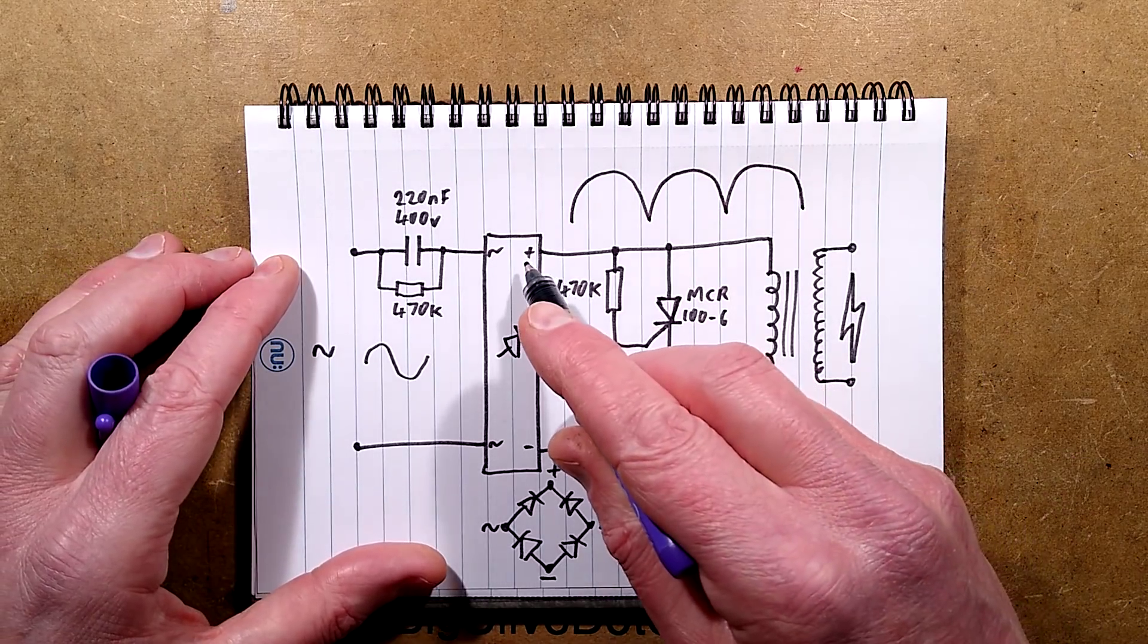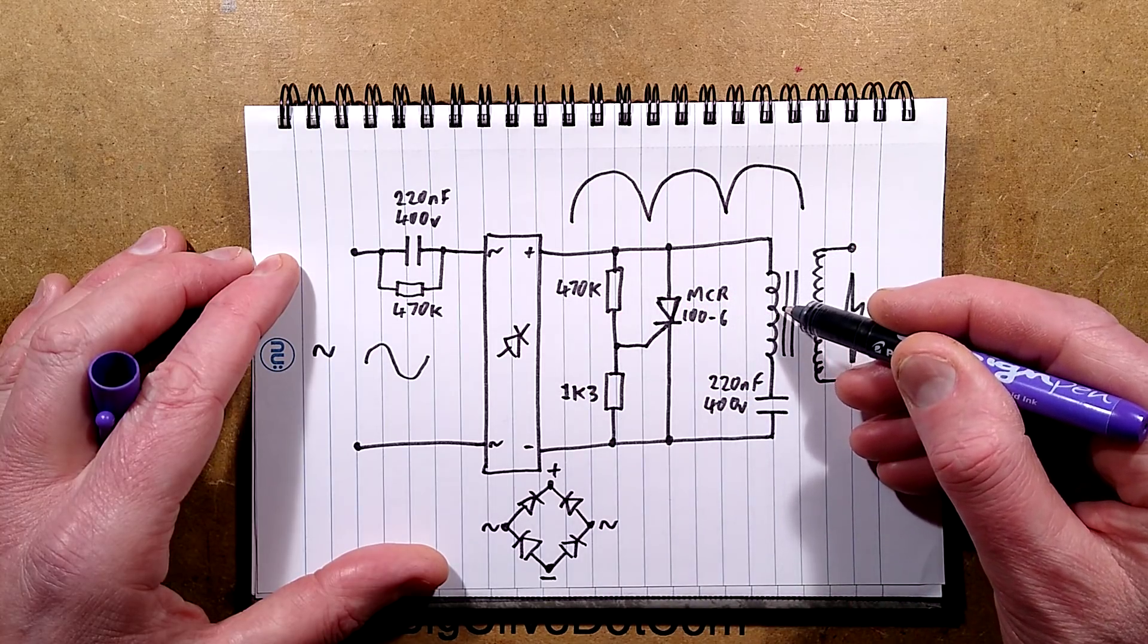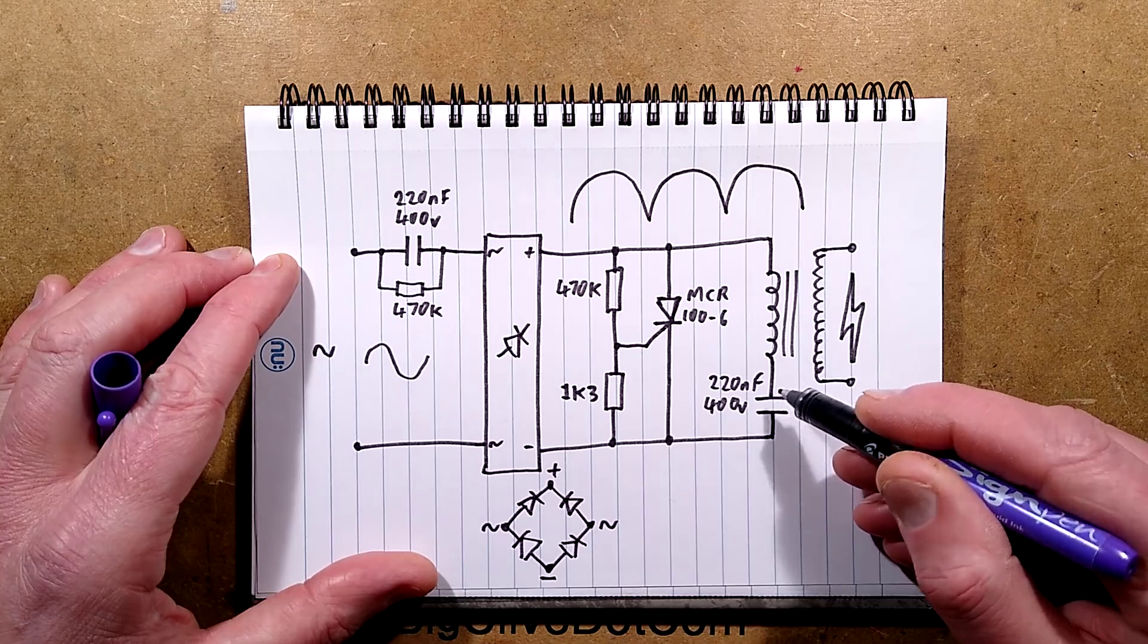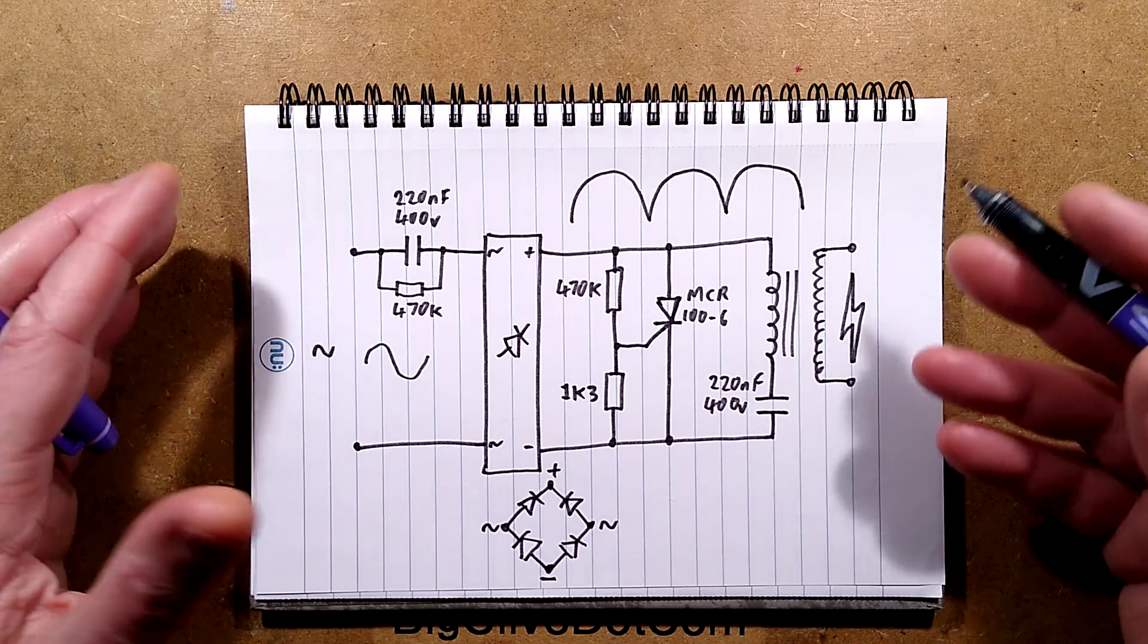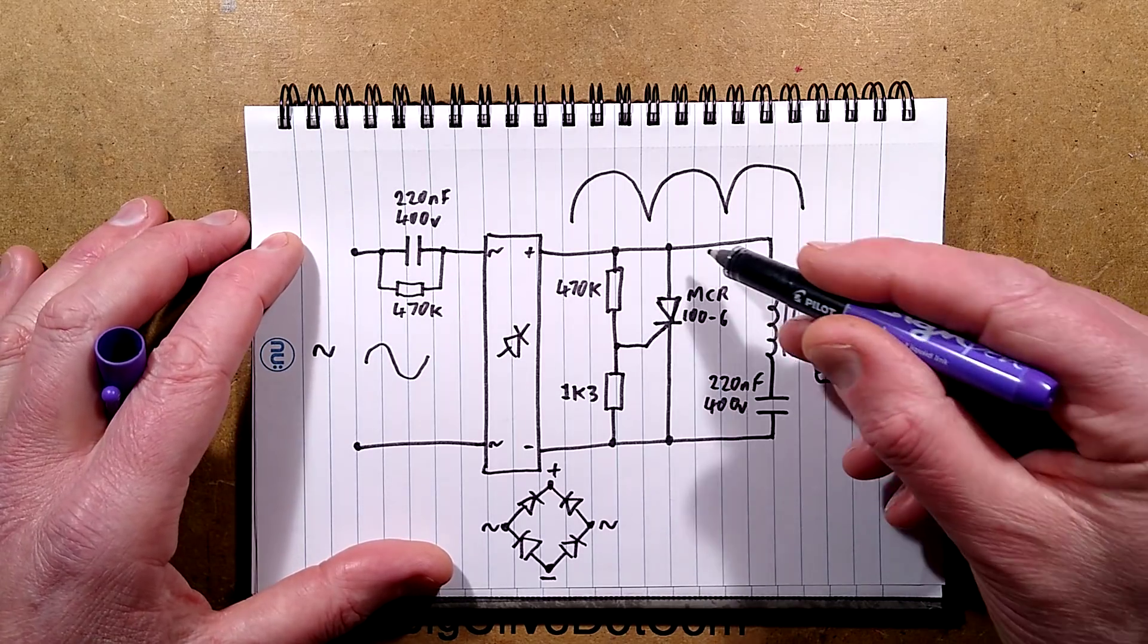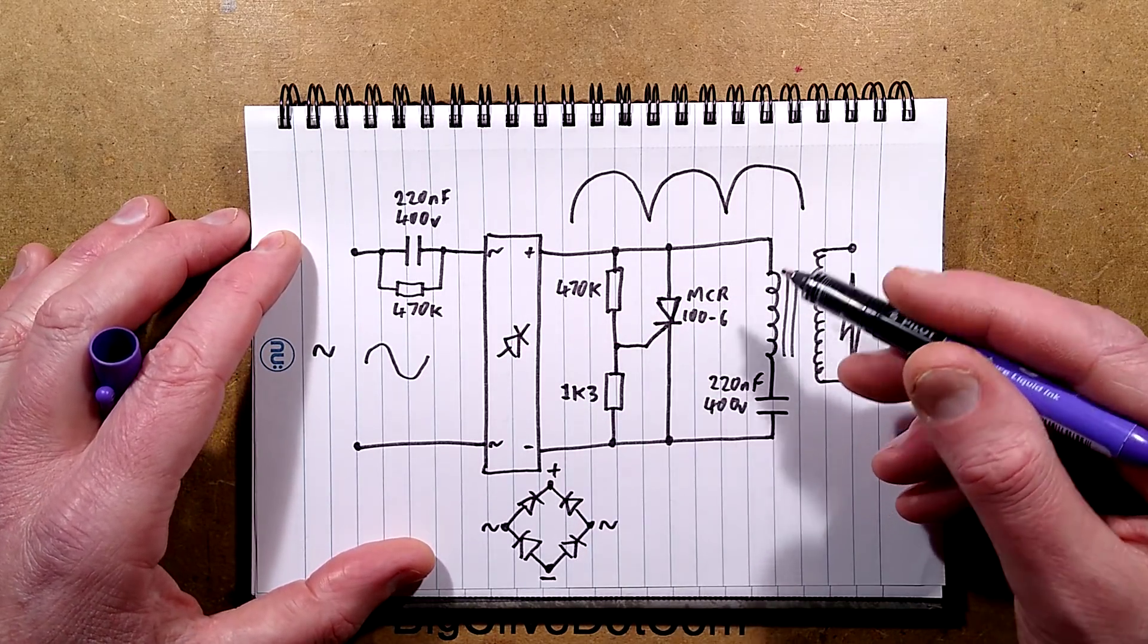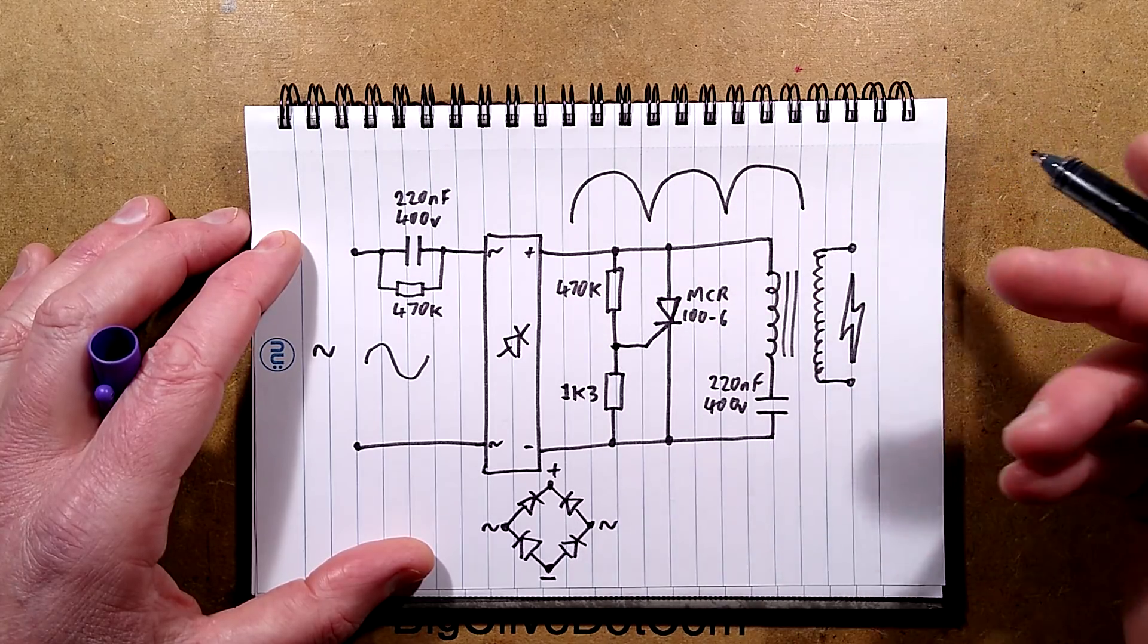So that rectified but unsmooth DC then goes through this inductor, that's the really coarse winding of the transformer, and charges this 220 nanofarad capacitor. Then the thyristor is just across that, but it's also across the incoming supply, it's a bit strange. It's simple. That's what they've done. They've gone for simplicity instead of efficiency.